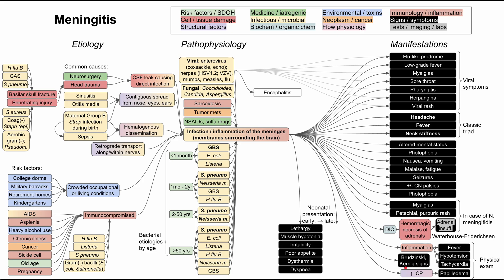There are unique manifestations in pediatric populations. Neonates cannot report headache, fever, or neck stiffness, so meningitis manifests differently. Early signs include lethargy, muscle hypotonia, irritability, poor appetite, dysthermia — meaning the baby can be either febrile or hypothermic — and dyspnea. As the condition progresses, more severe cases may show fontanelle bulging, high-pitched cry, and seizures. It's important to know these differences since children cannot report many of the symptoms seen in adolescents and adults.